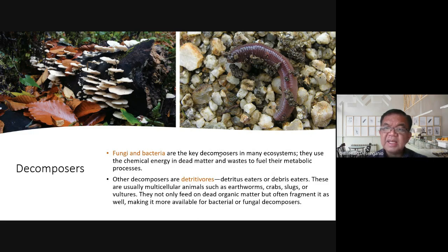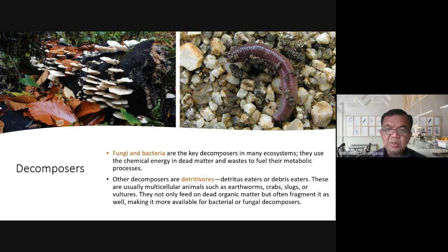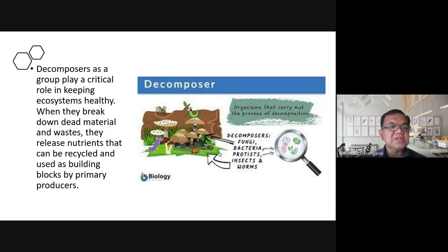One well-known benefit of earthworms is that they improve the soil. This is why we have earthworm castings — what is now known as vermicompost — which is familiar to farmers and plant enthusiasts. Decomposers as a group play a critical role in keeping ecosystems healthy. When they break down dead material and waste, they release nutrients that can be recycled and used as building blocks by primary producers.